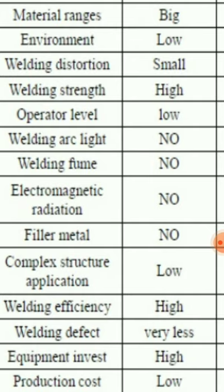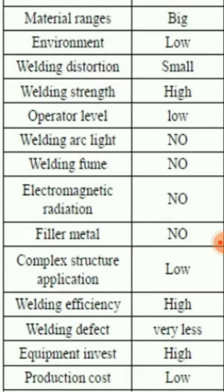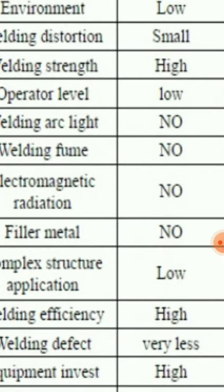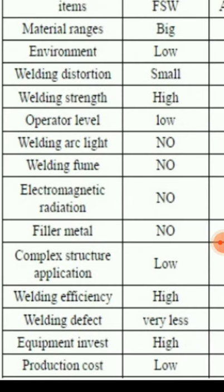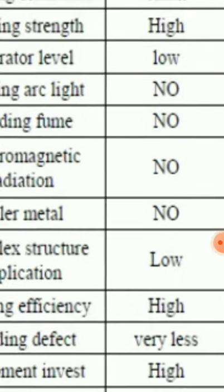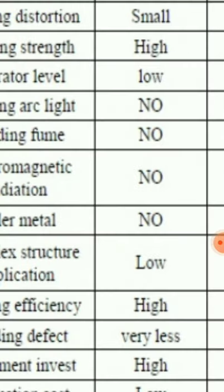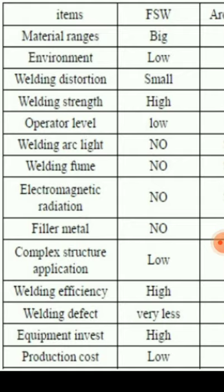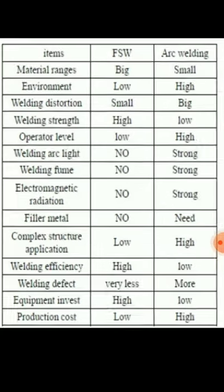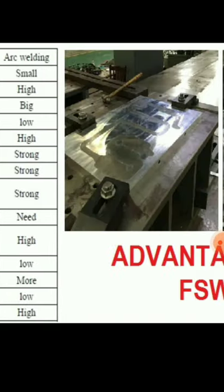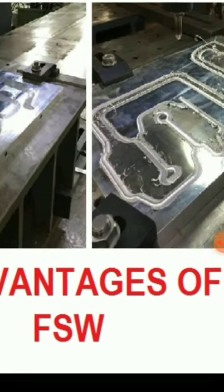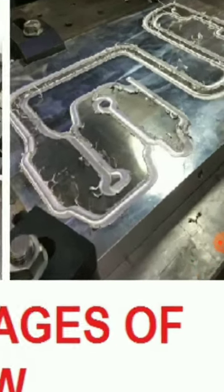No filler metal is required. Welding efficiency is high. However, complex structure applications are a limitation. Welding defects are very low. Equipment investment cost is very high because the machine cost is very high, and production rate is also low. These are some advantages and limitations of friction stir welding.